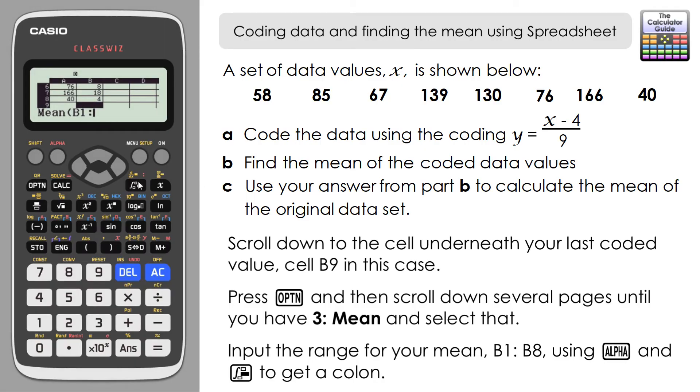Then the last cell that we want to include, which is cell B8. Press equals and here we have the mean of the coded data: 10.125. That's answered part B of our question.